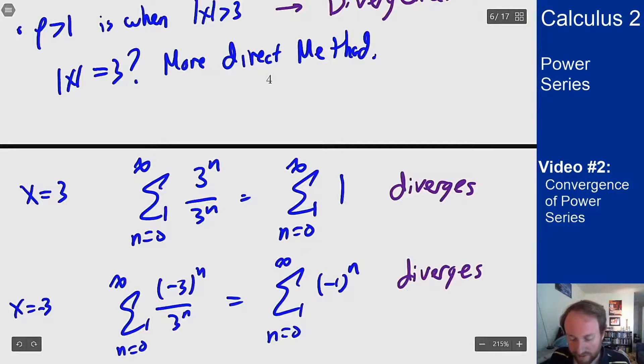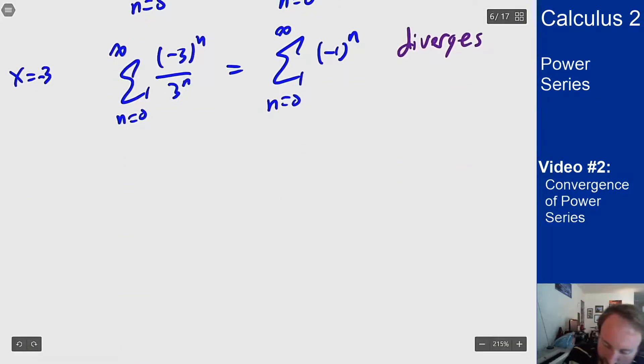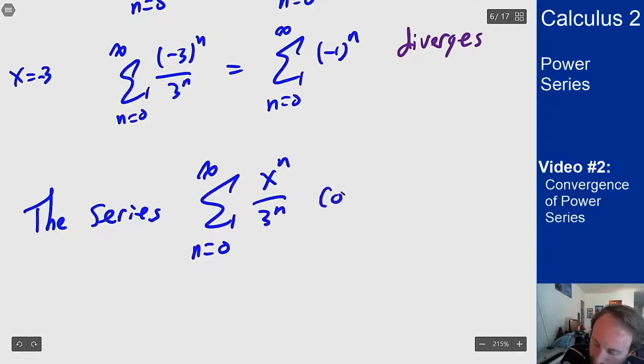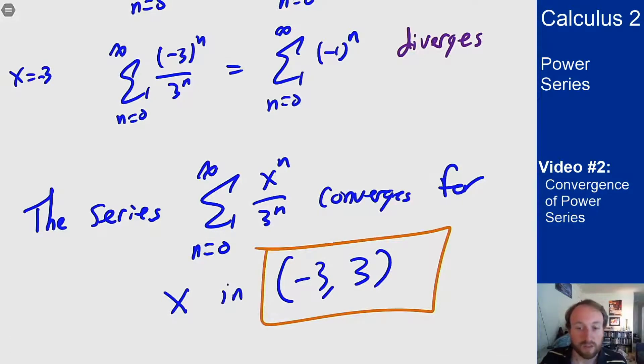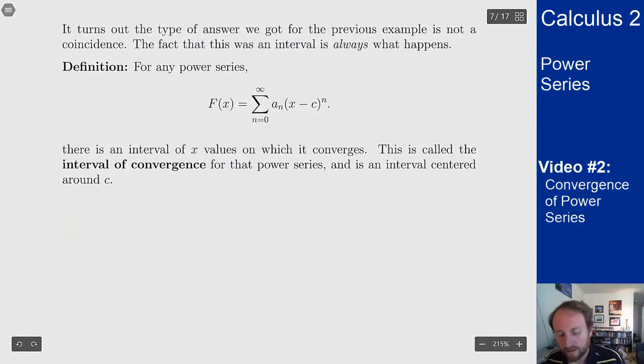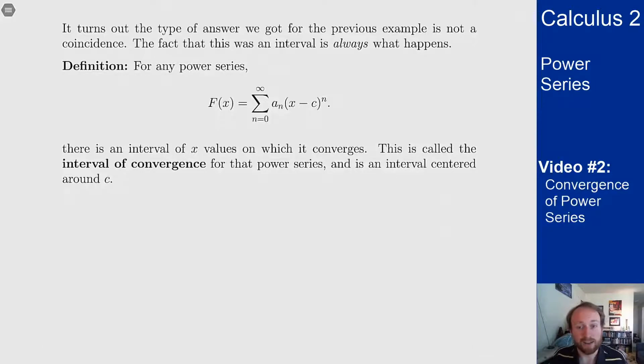So what all this says is that the series sum n from 0 to infinity of x to the n over 3 to the n converges for x in the interval from minus 3 to 3. The process here was ratio test into checking the endpoints to see what happens at those endpoints of the interval. Now the fact that I got an interval for that is not a coincidence. The answer to this question is always an interval.